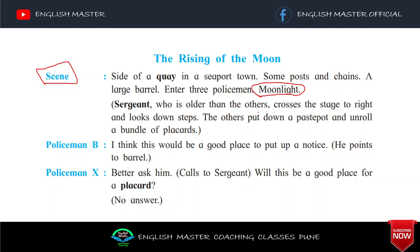Quay — Q-U-A-Y — a stone or metal platform lying alongside or projecting into water for loading and unloading ships. Yaani jahan se ships ko load aur unload kiya jata hai. Sergeant: a police officer ranking above constable but below an inspector — yaani inspector ke hath ke niche jo kaam karne wala police officer hai, woh hai sergeant. He crosses the stage to right and looks down steps — woh right side pe aa gaya aur niche ki taraf dekh raha hai.